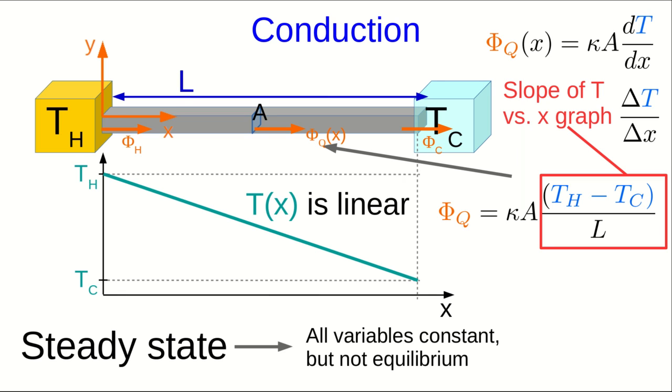And more generally, even when it's not in steady state, the flux at any location involves the derivative of the temperature with respect to position. This constant kappa is a material property of the rod called the thermal conductivity.